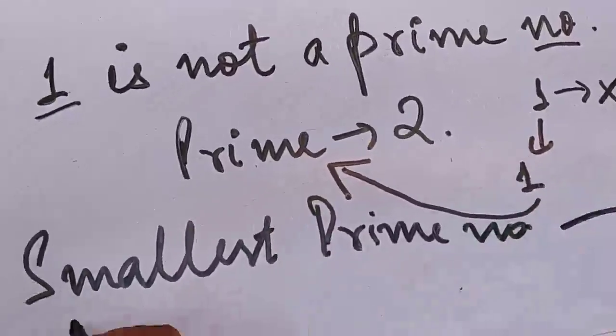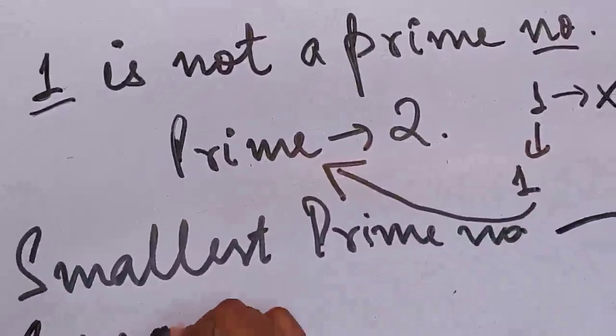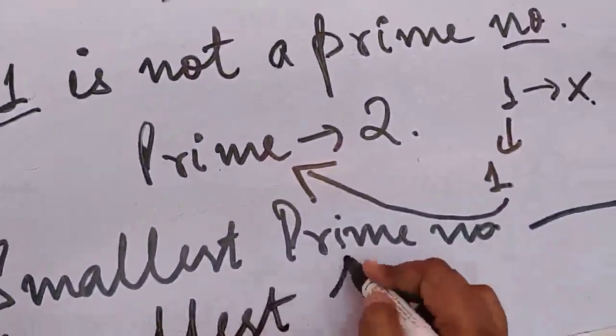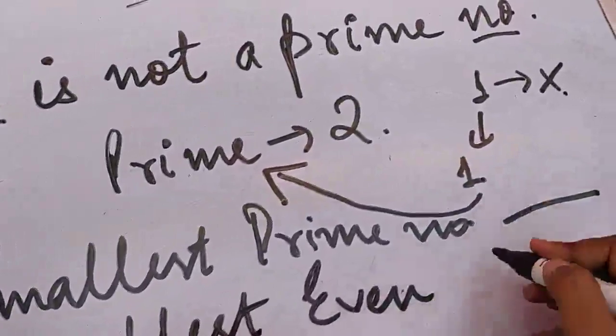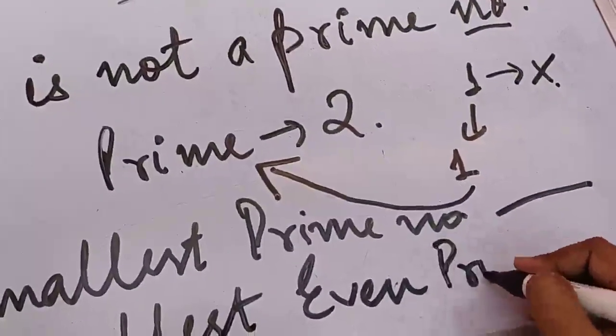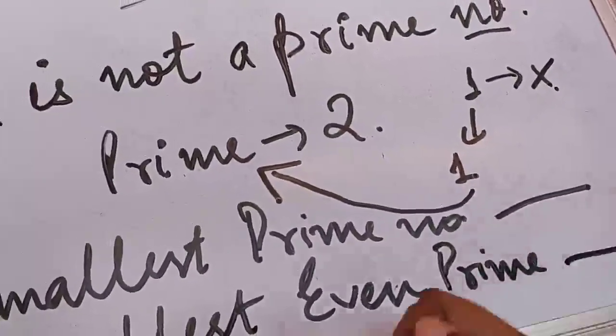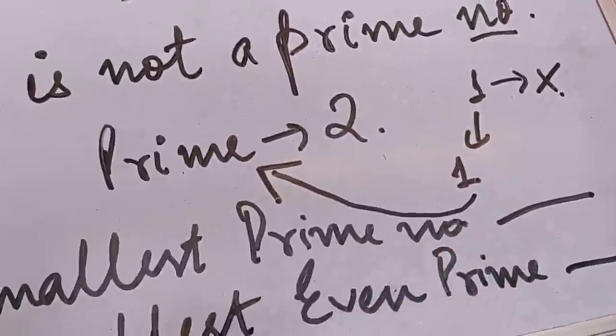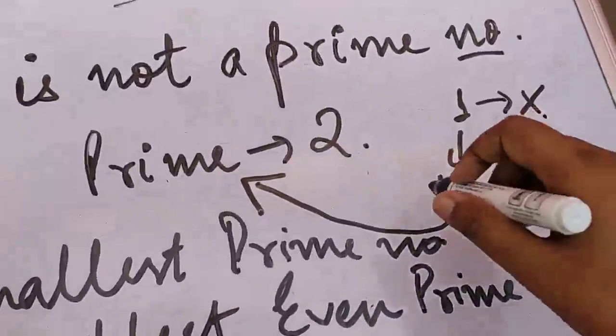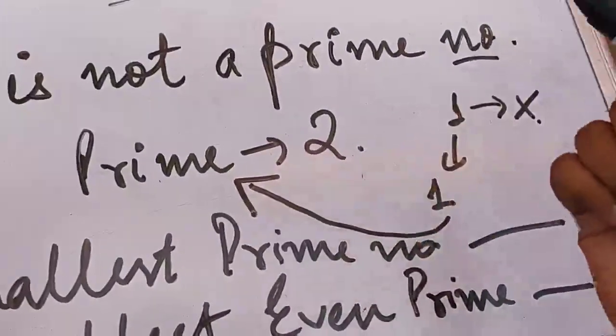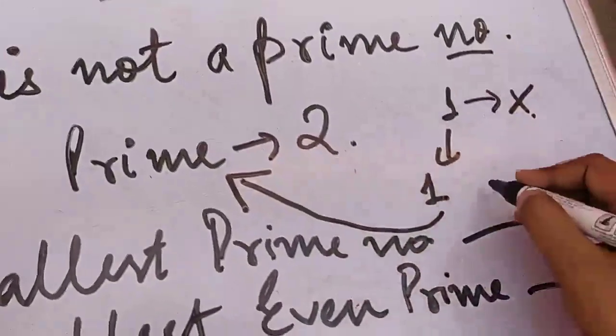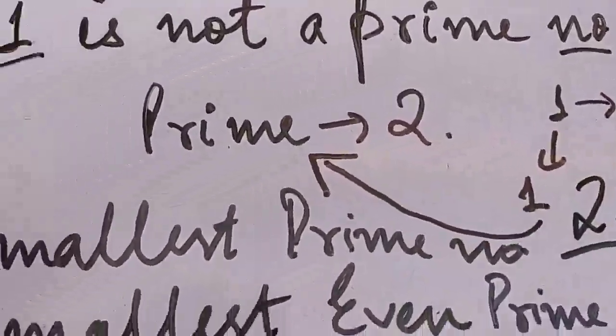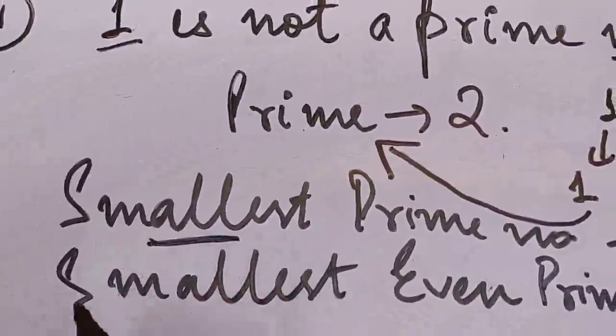If we talk about the smallest prime number, what will be the smallest prime number? When 1 is not prime, then we talk about 2. How many factors does 2 have as we just read? It has two. So it is a prime number. This means the smallest prime number is 2. Smallest means the smallest.